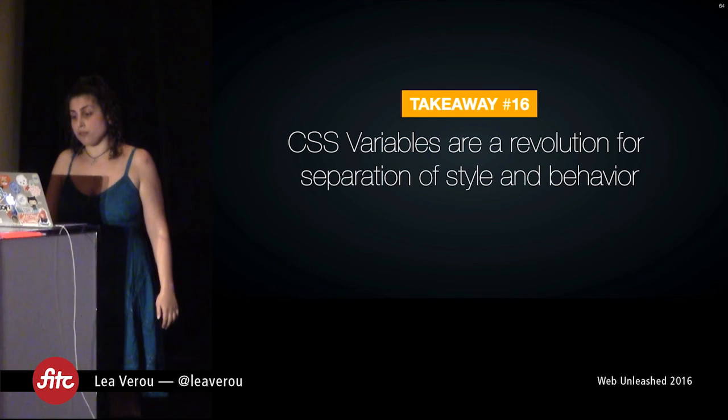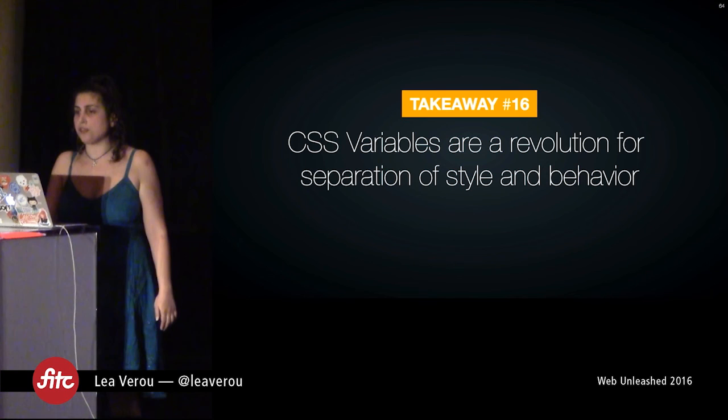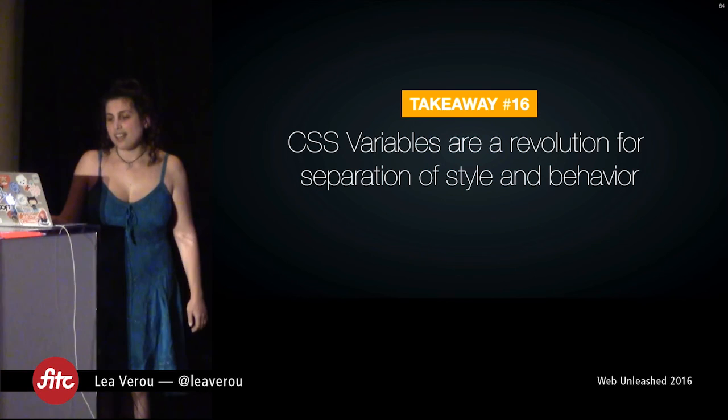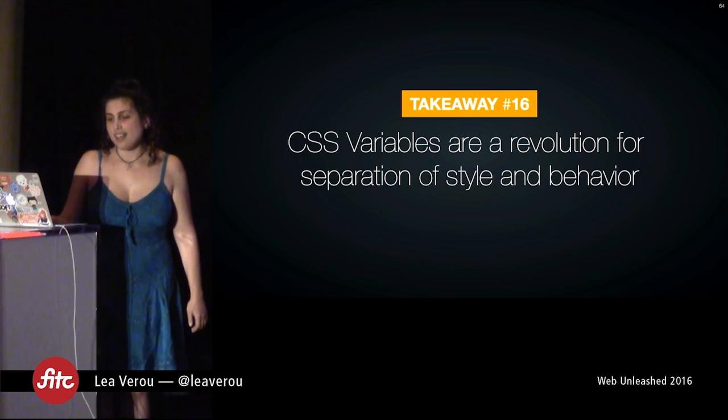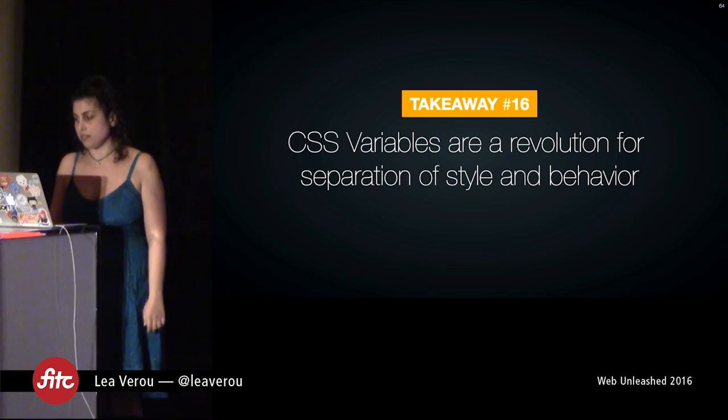The last takeaway: CSS variables are a revolution for separation of style and behavior. You hear people enthused about React wanting to move all CSS and HTML to JavaScript and have JavaScript consume the web. CSS variables let JavaScript set exactly the parts that need to vary, while your style stays exactly where it belongs — in the CSS.